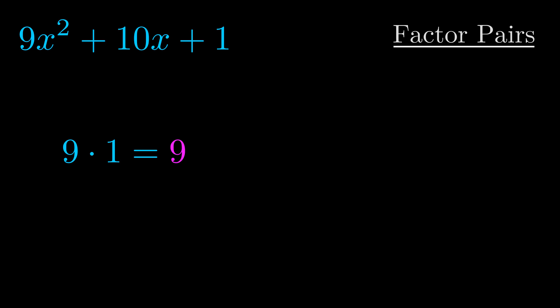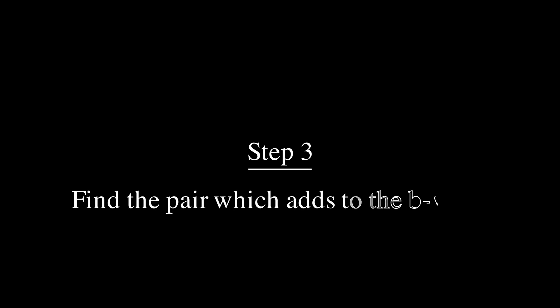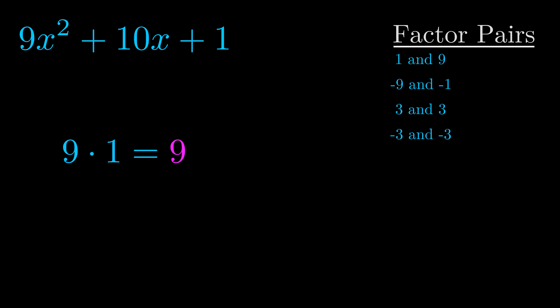Okay, here's what I came up with. Now once you have these factor pairs, the goal is to find which of these pairs adds to the b value. The b value is the coefficient on the x term — that's the middle term, the one that we haven't done anything with yet.